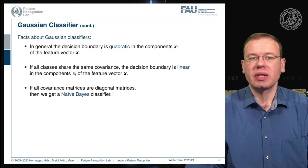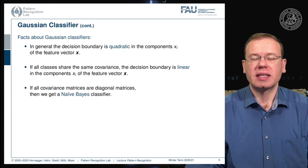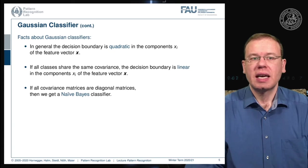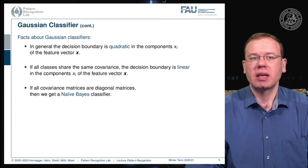Regarding decision boundaries: if we model both classes as Gaussian, we get a quadratic decision boundary. If the two classes share the same covariance matrix, the decision boundary becomes linear in the components of the feature vector x. The naive Bayes approach, when mapped onto a Gaussian classifier, results in diagonal covariance matrices.